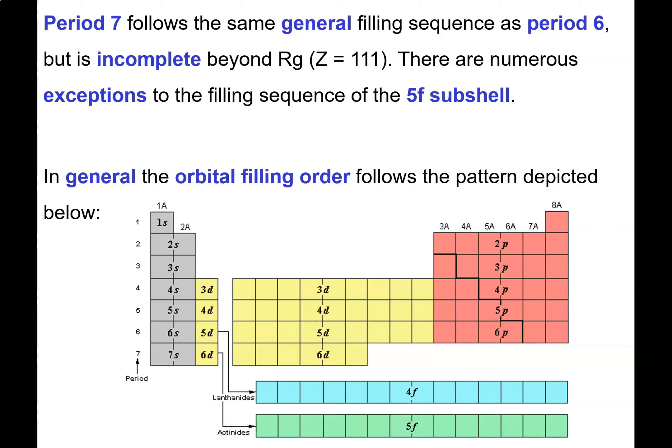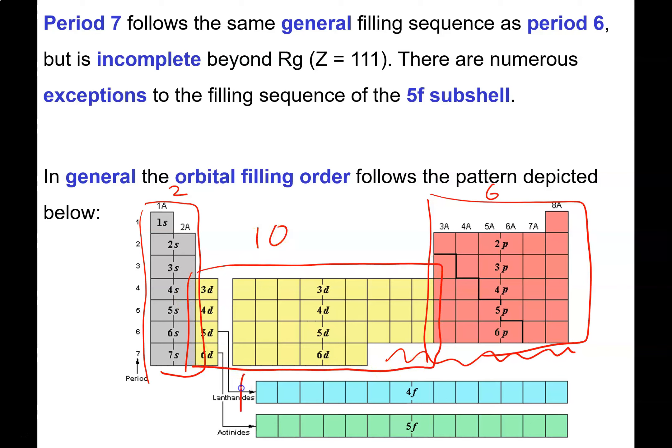Period 7 follows the same general filling sequence as period 6, but what you see down here is that period 7, we don't have to go all the way out here because we actually run out of elements. So how does the order go? On the periodic table we have two columns over here and six columns over here, and then we have 10 columns in the middle, and then at the bottom we have 14 columns.